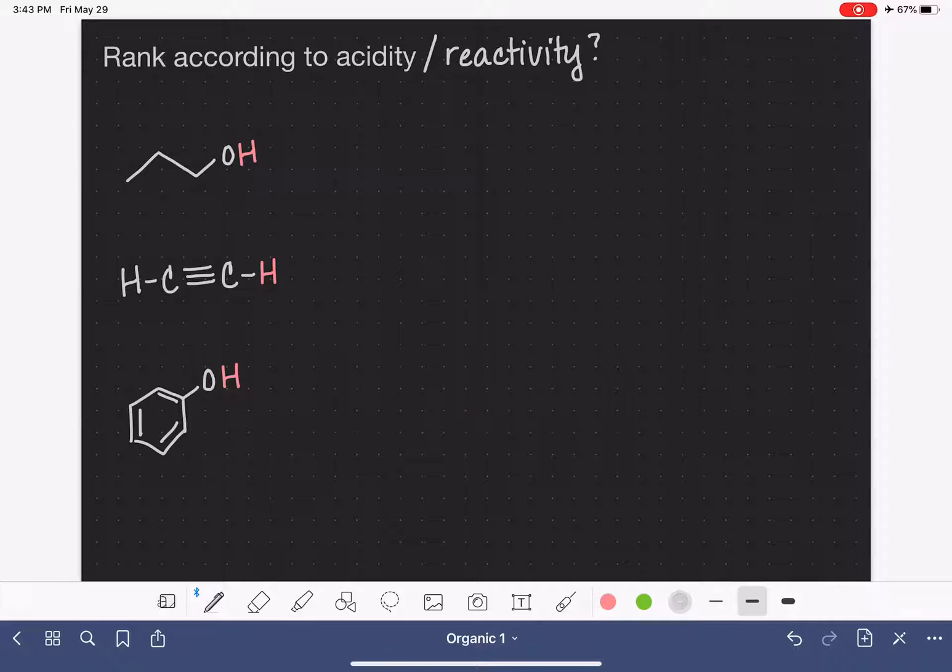Which one of these is the most reactive and which one is the least reactive? In the structures I've provided here, you'll see that one of the hydrogens in each structure has been colored pink because that hydrogen is the acidic hydrogen or the acidic proton.